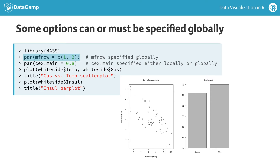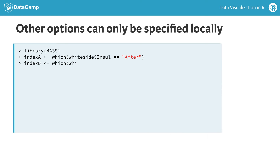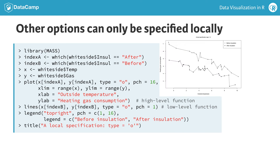The parameter cex.main specifies the relative size of the text in plot titles, and it can either be specified globally, as in this example, or locally as an optional argument to a base graphics function.